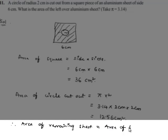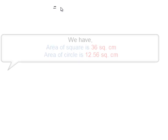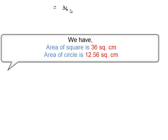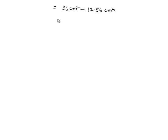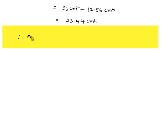Therefore, the area of the remaining sheet equals area of square minus area of circle cut out. That is 36 cm² minus 12.56 cm², which equals 23.24 cm². Therefore, the area of the remaining aluminium sheet is 23.24 cm².